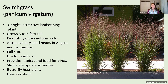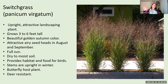On the wetter end of the spectrum, switchgrass doesn't mind moist soils at all. It also forms great clumps, growing up to six feet tall. In the picture you can see those seed heads, and then the rest of it will follow with gorgeous golden colors. It likes full sun, provides winter interest, and the birds and butterflies are going to love it. It is also deer resistant.